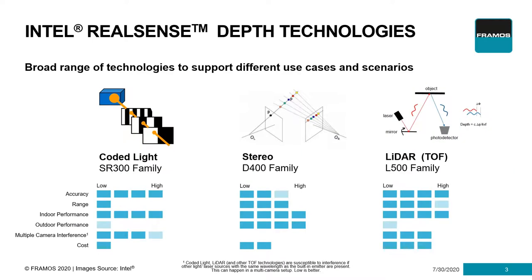Intel RealSense offers several depth technologies to choose from. Each technology and product family fits a different usage scenario. We will have a look at coded light, stereo, and the latest in the family, the LiDAR L500 series. Coded light and stereo are based on triangulation — by knowing the baseline between projector or image sensors, the focal length, and the spatial pattern projected, the distance of a particular object can be calculated on a pixel-by-pixel basis.